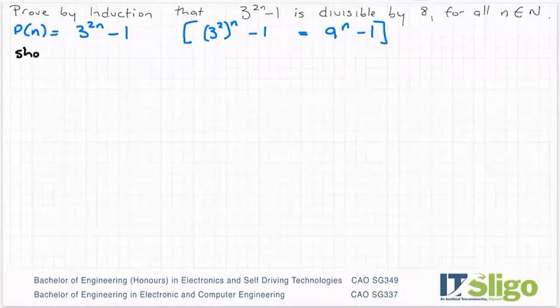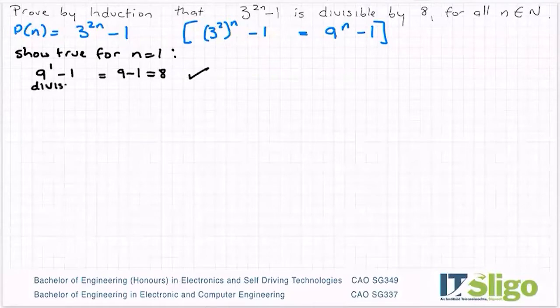So what I'm going to do is show true for n = 1. I'll end up with - and I'm going to work from this one here but it doesn't matter - 9^1 - 1. So that is 9 - 1 which is 8, and that is divisible by 8.